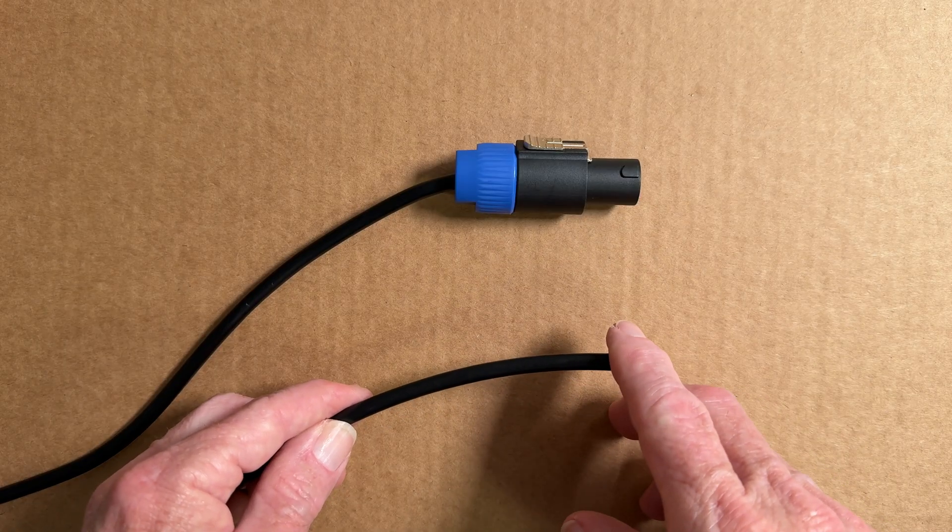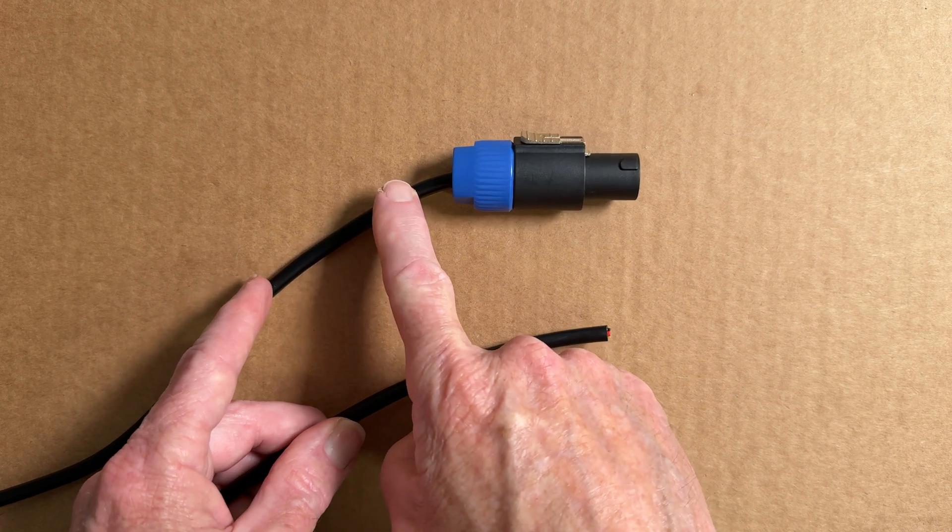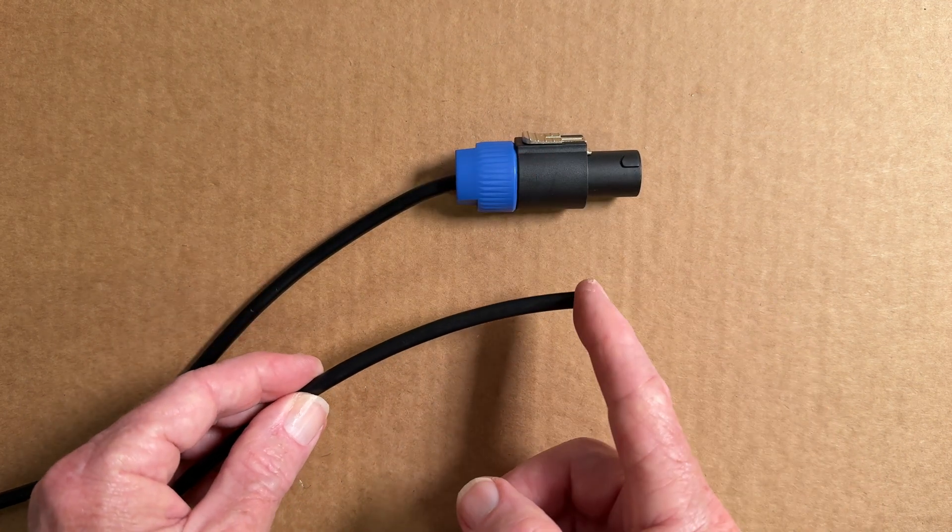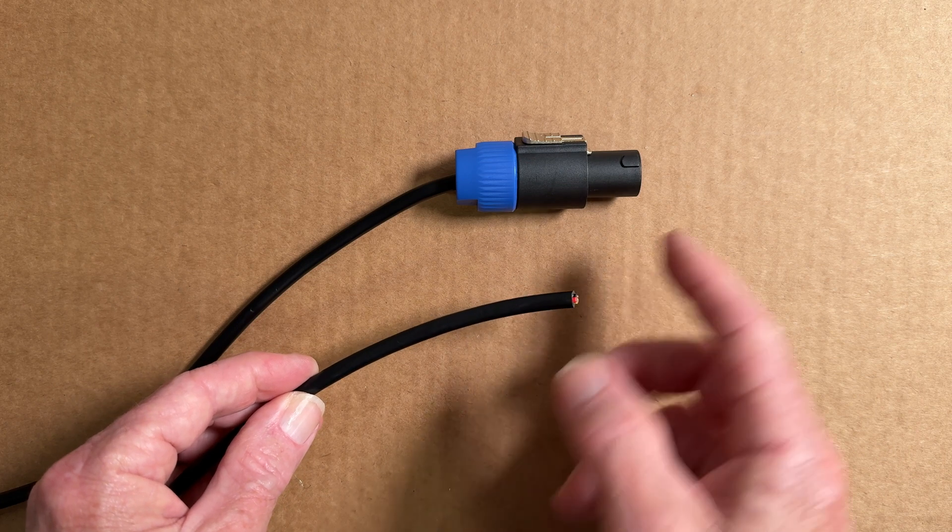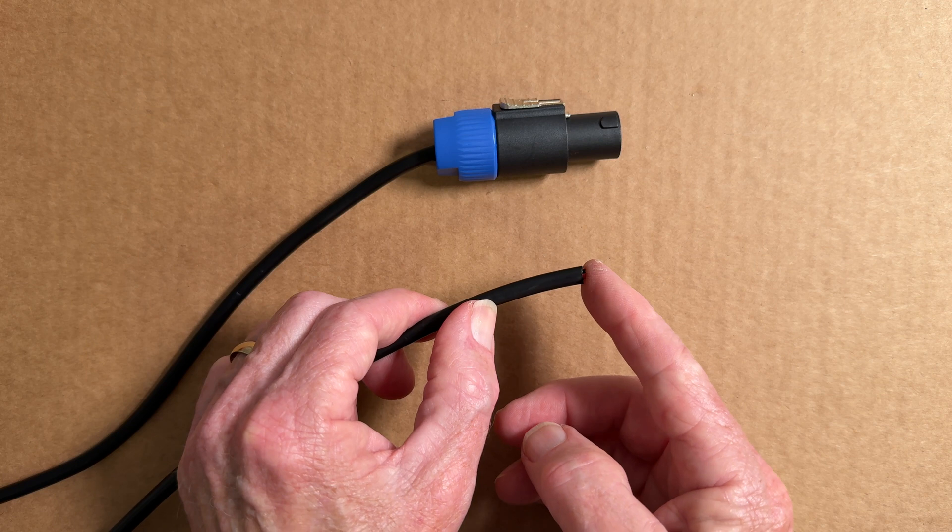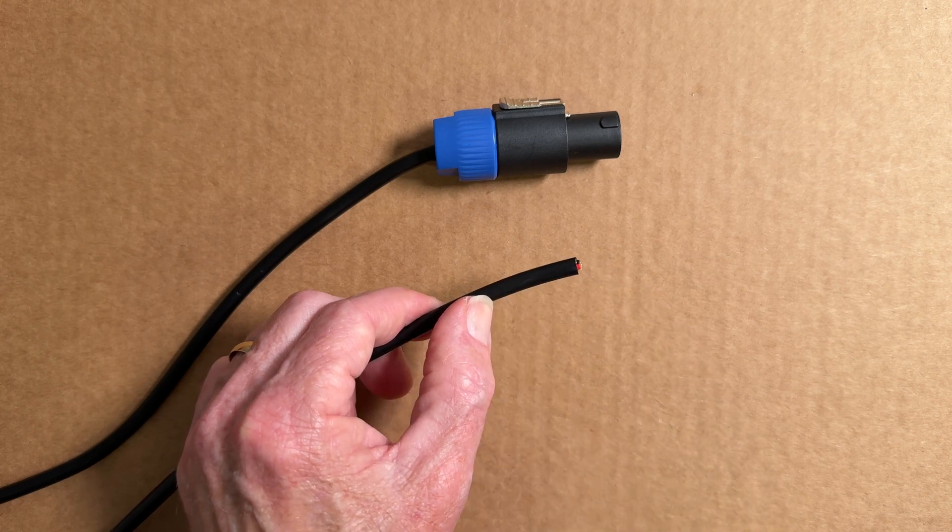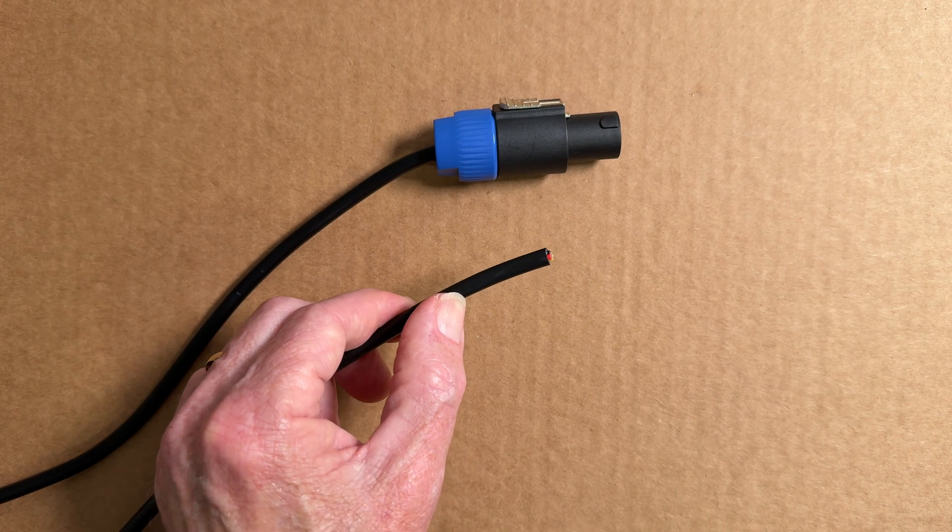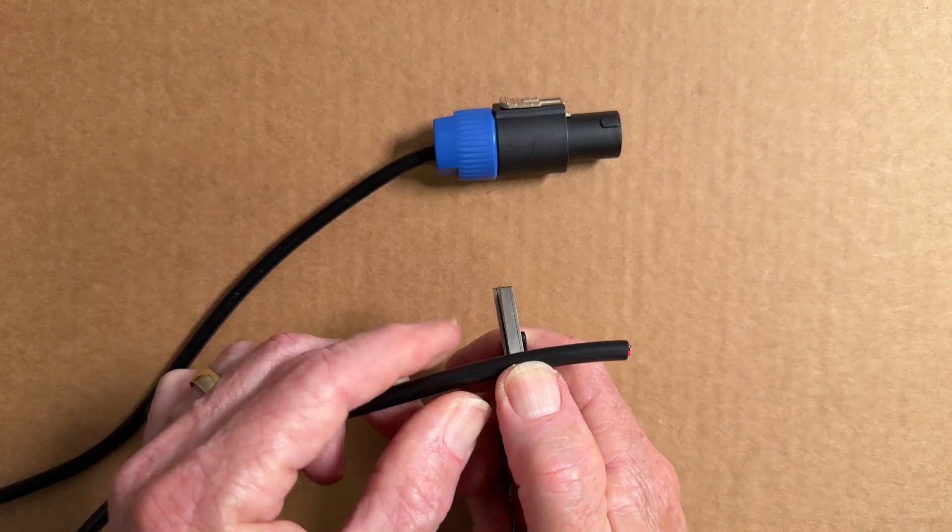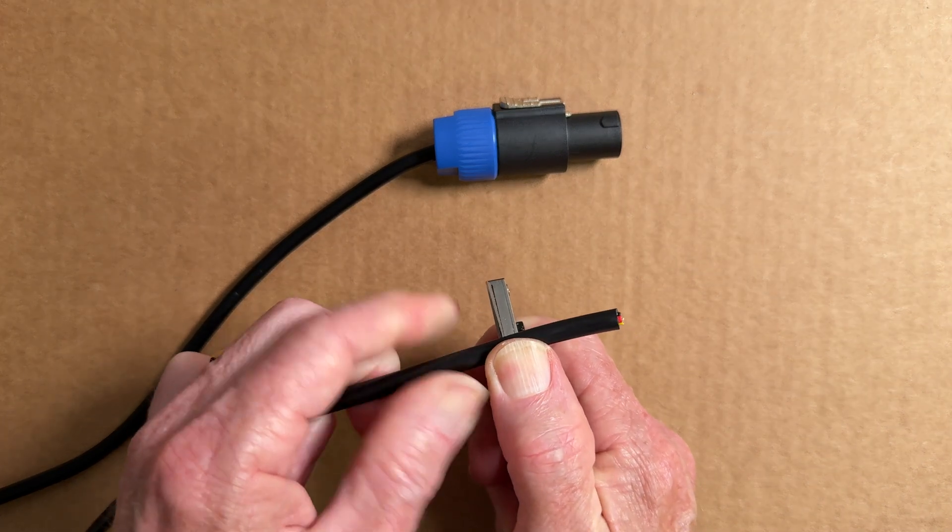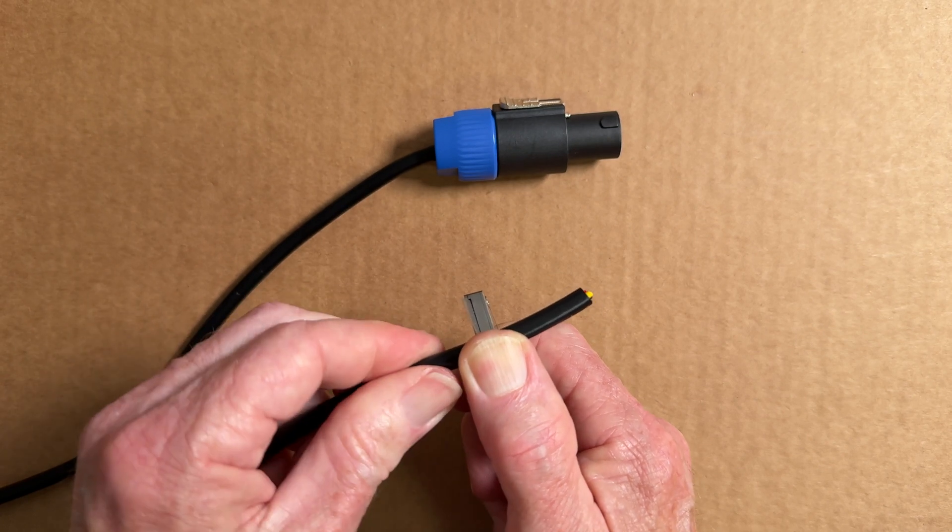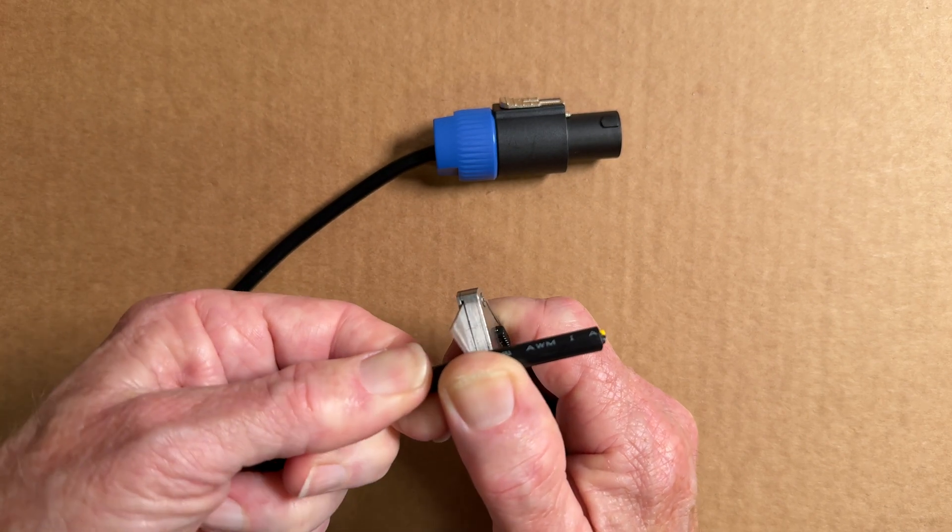Let's go ahead and disconnect the original wire from the Neutrik speakon connector and connect our new shielded wire. The first thing we'll need to do is strip back about an inch, inch and a half or so of this insulation. We're going to score a line through the insulation, but don't go too deep. You don't want to cut into the shielding or the wires underneath. We're just going to kind of roll that until we've made it all the way around.